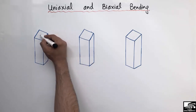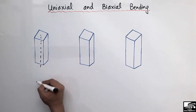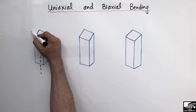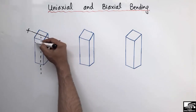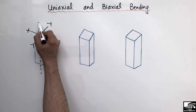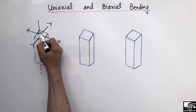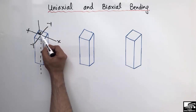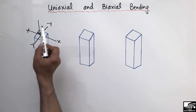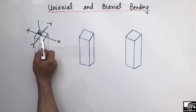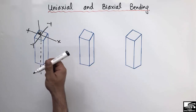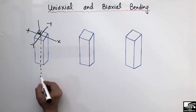Let's consider this is a column and this is the axis of this column. Starting from the simple case: this is the x-axis of the column and this is the y-axis. When the load acts at the centroid of the column — at the center of both axes — and is also parallel to the vertical axis, we call this a concentric load or axial load.